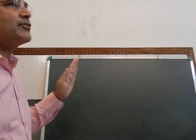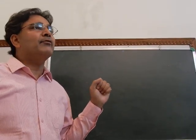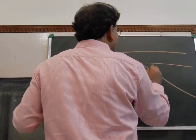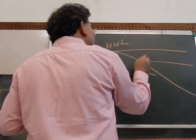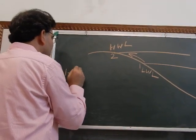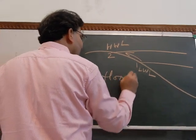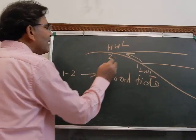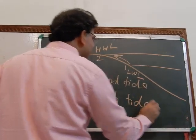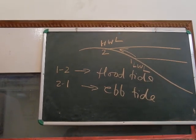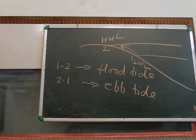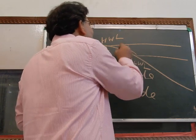Tidal currents are very dominant in the tidal environment. The rise of water from the low water level towards land is known as the flood tide, and the return of water back is known as the ebb tide. The flood current and ebb current flow in opposite directions and are known as bipolar currents because they reverse their direction.